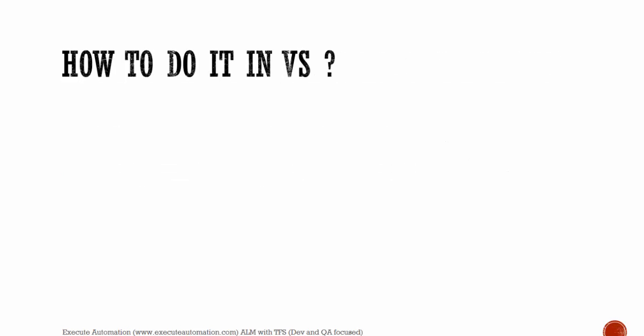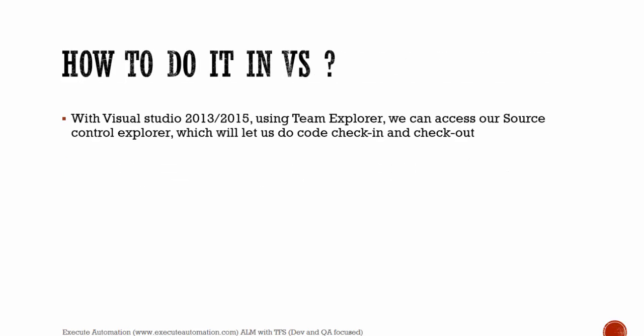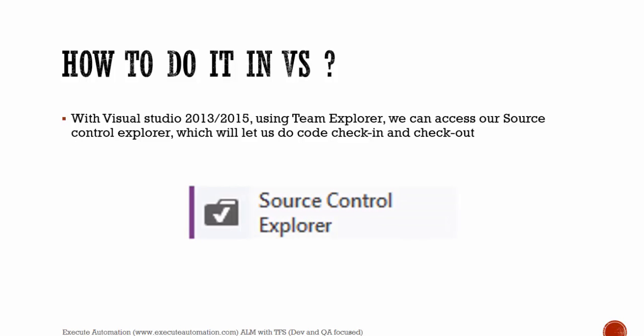So how to do it in Visual Studio? With Visual Studio 2013 or 2015, using Team Explorer we can access our Source Control Explorer, which will let us do code check-in and check-out. This is how the Source Control Explorer looks in Visual Studio 2015.